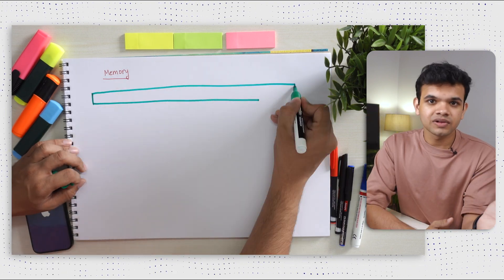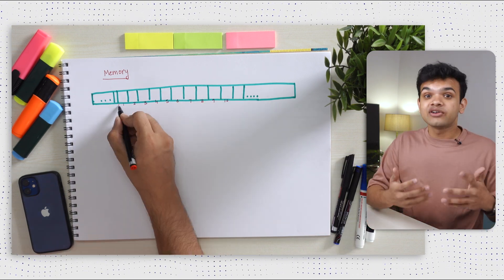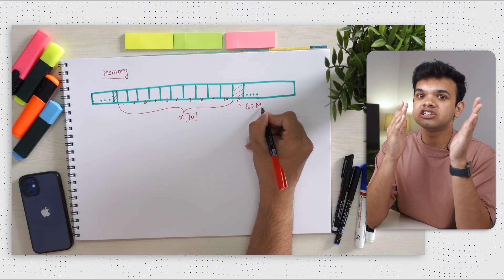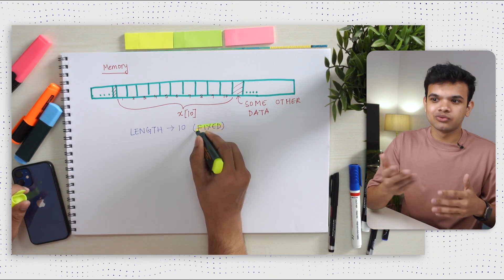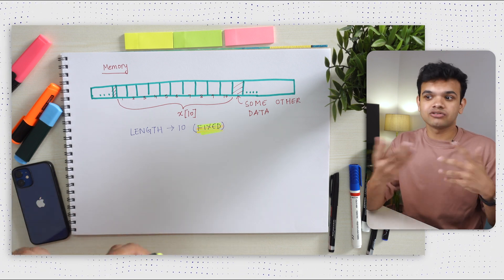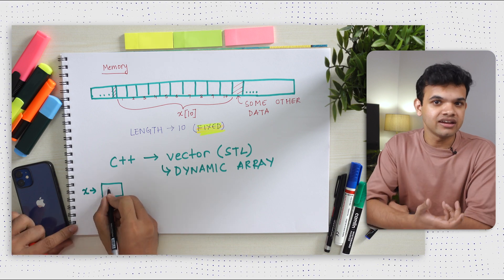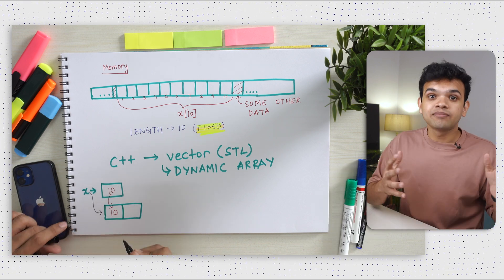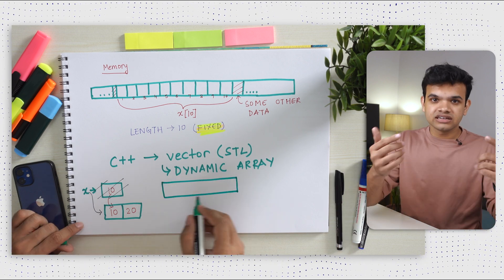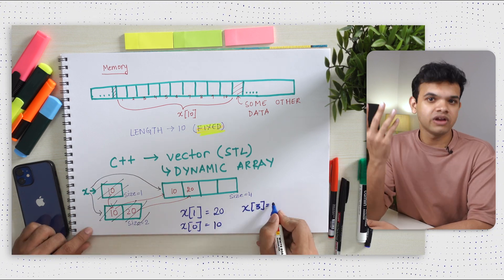How are arrays stored in memory? The compiler reserves the number of places you want in memory in a sequence based on the length you've defined. But if the memory just after that is given to some other function, we can't change the size of an array once it is defined. That's problematic for dynamic arrays. C++ already has a dynamic array in its STL library called vector — it starts with an array of size one, and as soon as it's filled, it doubles the size, copies all contents to the new array, deletes the previous array, and points the variable to the newer array. This repeats whenever we run out of space.